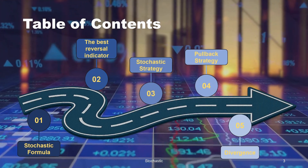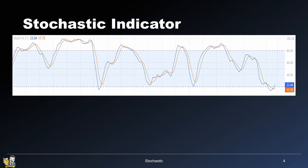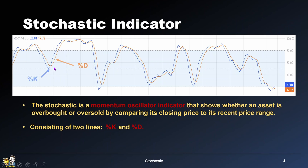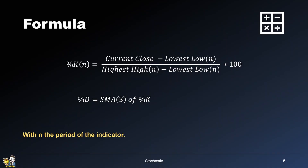Here's what we're going to cover in this video. Let's start by taking a look at the stochastic formula. It's a momentum oscillator indicator that shows whether an asset is overbought or oversold by comparing its closing price to its recent price range. It consists of two lines: %K in blue and %D in orange. It's a bounded indicator because its values range between 0 and 100. You can calculate %K with this equation, and %D is simply the three-period moving average of %K. N is the period — it refers to the number of candles used for the calculation, and by default it's set to 14.